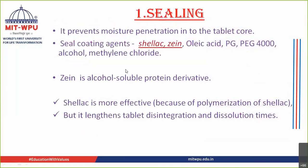The first step is sealing. In sealing, you protect and seal the tablet with the help of a sealing coating agent such as shellac or zein. Other agents like oleic acid, propylene glycol, alcohol, and methyl chloride can also be used, but the two major ingredients used in sealing are shellac and zein. The reason for sealing is to prevent moisture penetration.